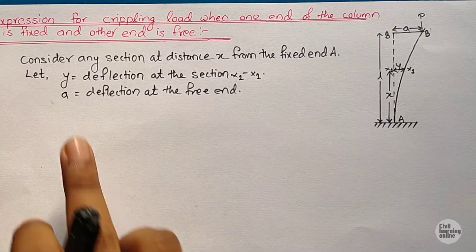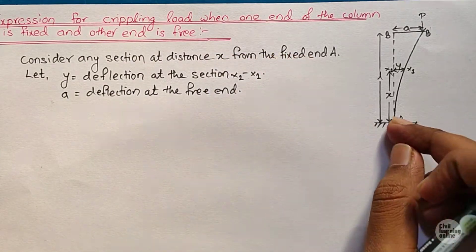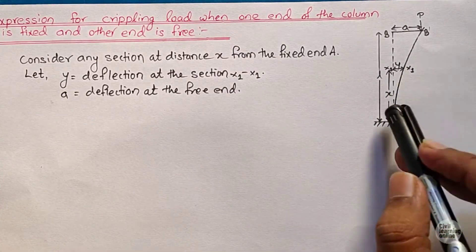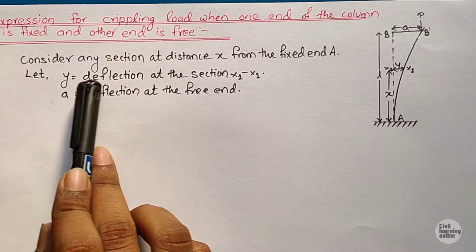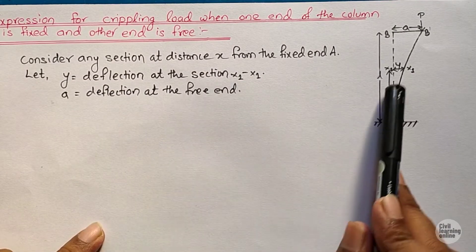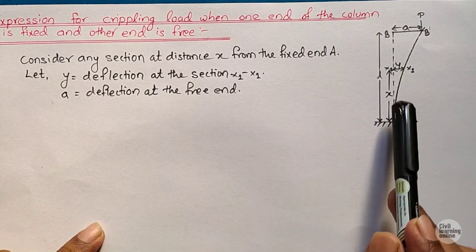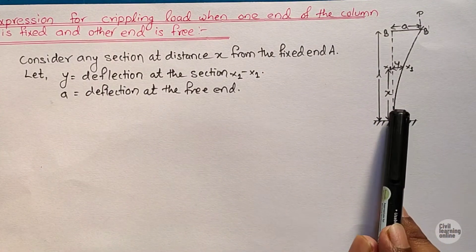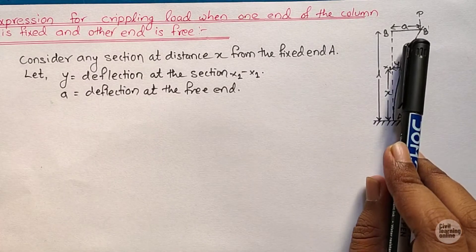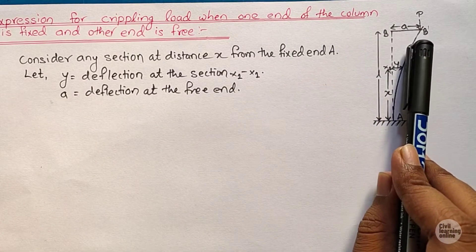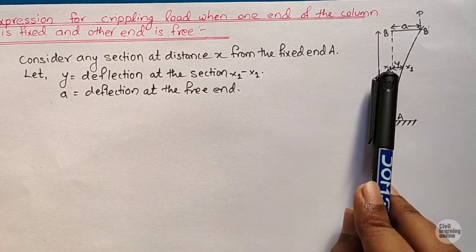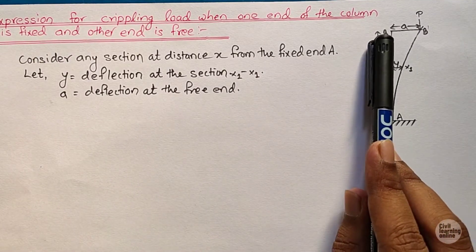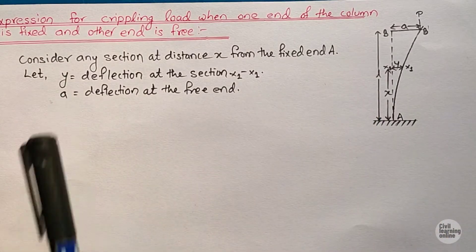Consider any section at distance x from the fixed end A — this is section X1X1 at distance x from support A. Y is the deflection at that section. Our original column is AB, and when the column deflects due to load P, the free end B reaches B-dash. The deflection at distance x from support A is y, and the deflection at the free end is 'a'.